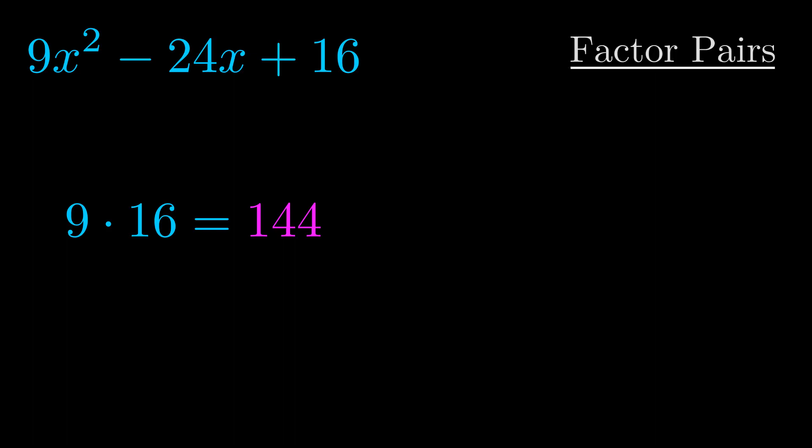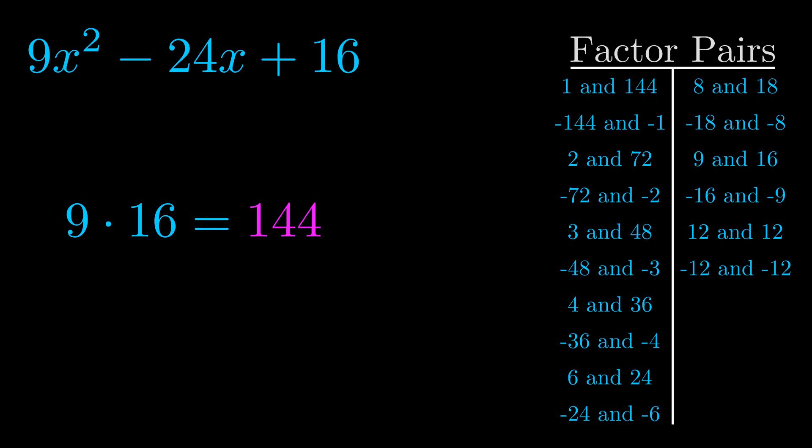Okay here's what I came up with. Now once you have these factor pairs the goal is to find which of these pairs adds to the b value.